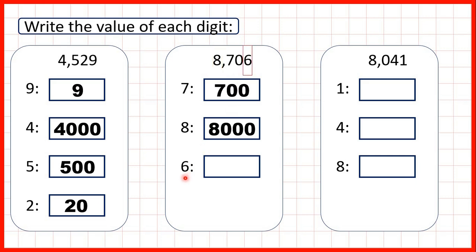And then the 6 is in our ones, so that just stands for 6. Now we also have a zero in this number. But whatever place value it's in, the value of the zero is just zero. A zero never has any value in itself. But zeros are important, because they give the other digits the right place value. So because we have a zero in this number, that means the 7 is in our hundreds, and we know the 8 is in our thousands.